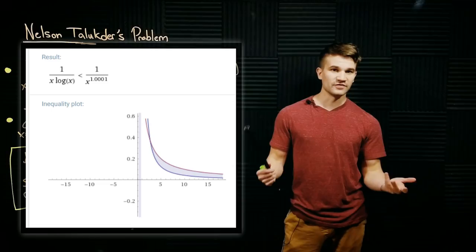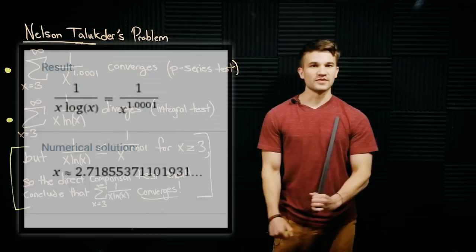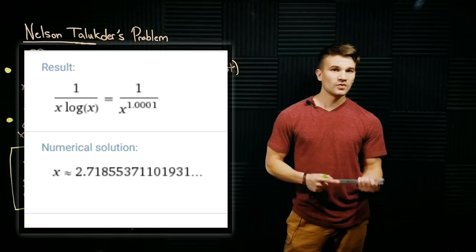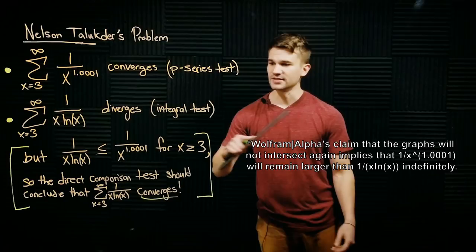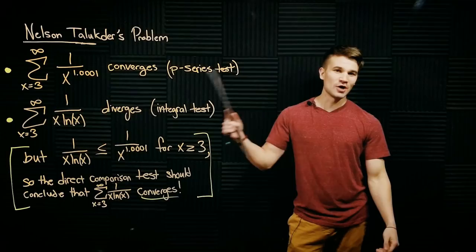First, I looked at the graphs of the two, and it looked pretty clear that this was the case. Then I set the two values equal to each other to see, are these two graphs going to meet at some point? And the only solution it gave was 2.7-ish, which was below the place where we start the series. So it looked like Wolfram was confirming that this inequality was true. So I was pretty confused at this point.